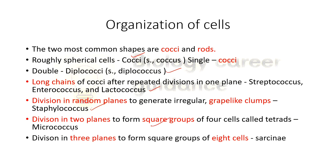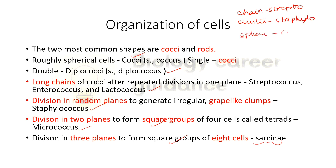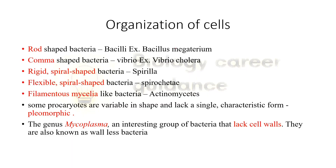Cluster of spherical-shaped bacteria is known as staphylococci. Division in two planes — two planes divide in square — forming tetrad. For example, micrococci is a tetrad. In three planes, we divide into a cluster of eight cells. We refer to eight cells as sarcina. So chain is streptococci, cluster is staphylococci. Rod-shaped bacteria is bacilli — for example, Bacillus megaterium.